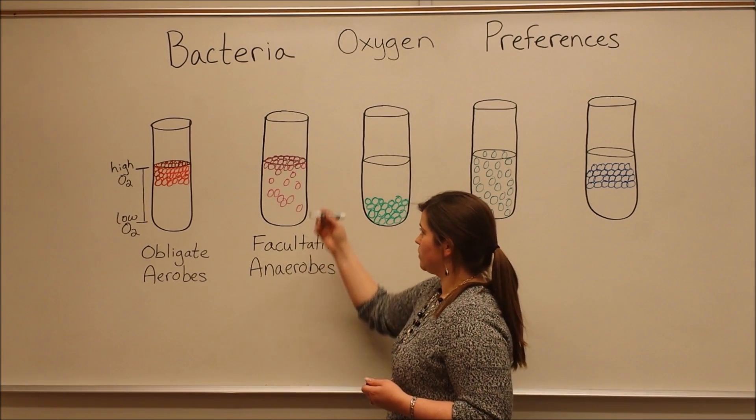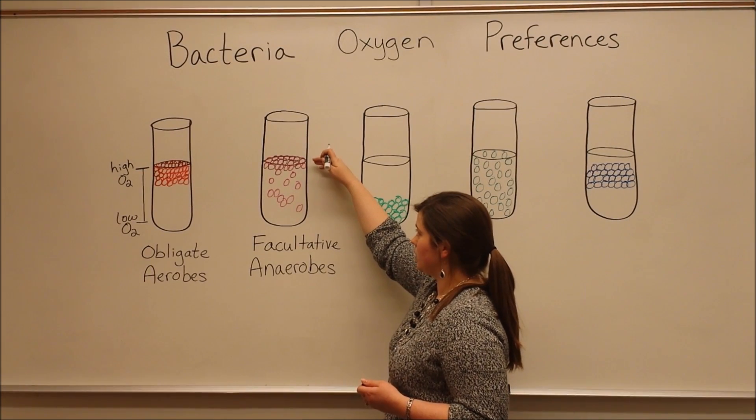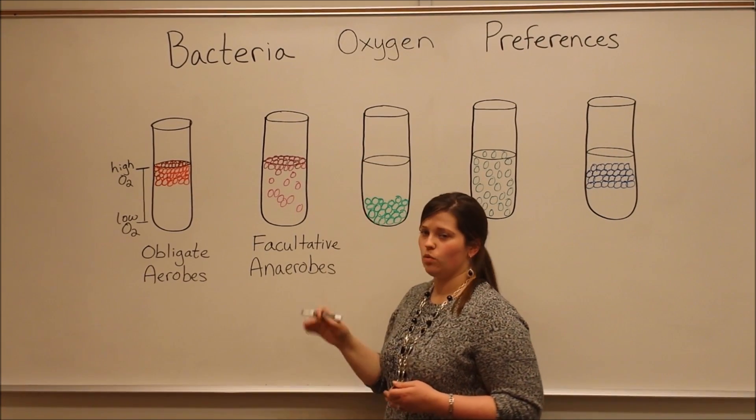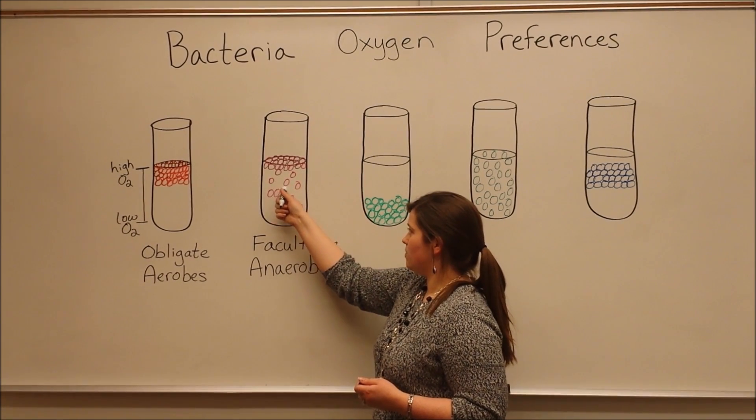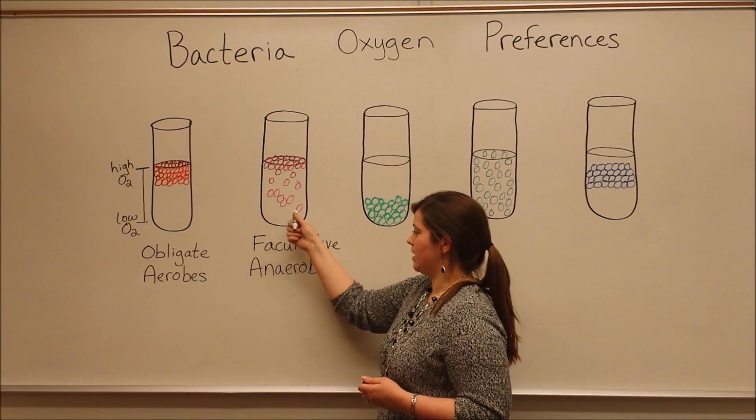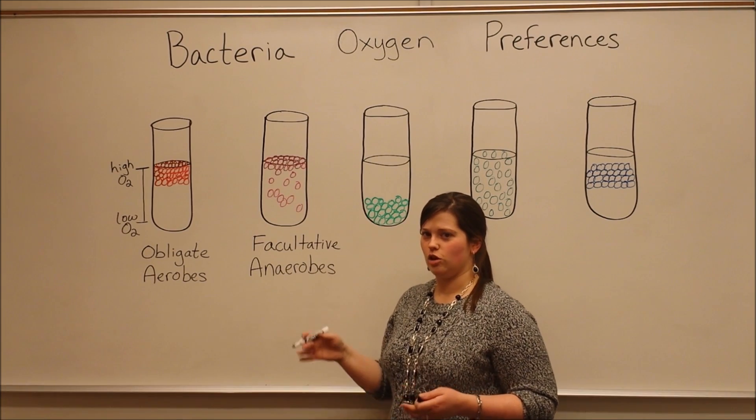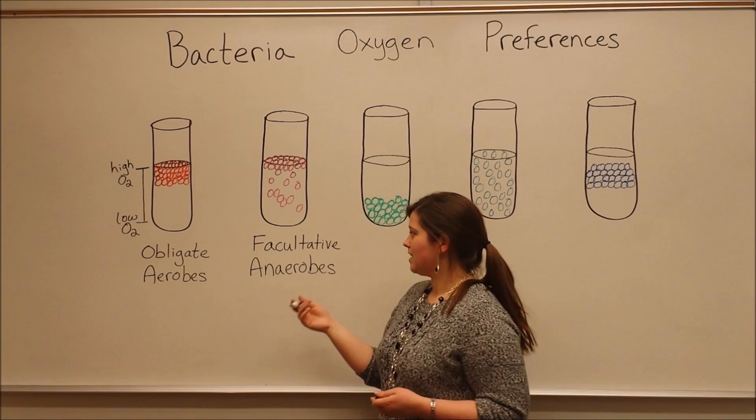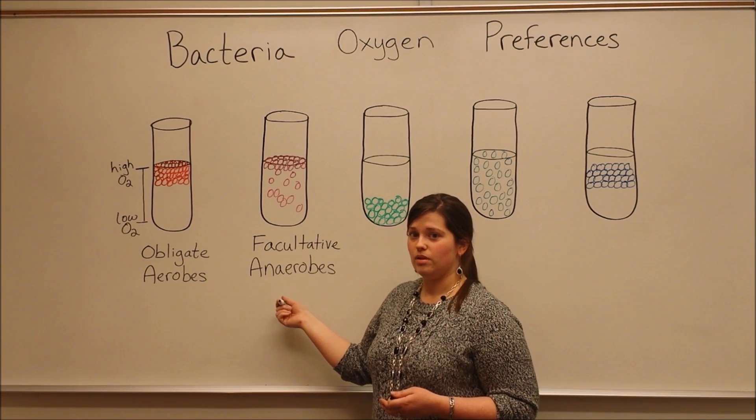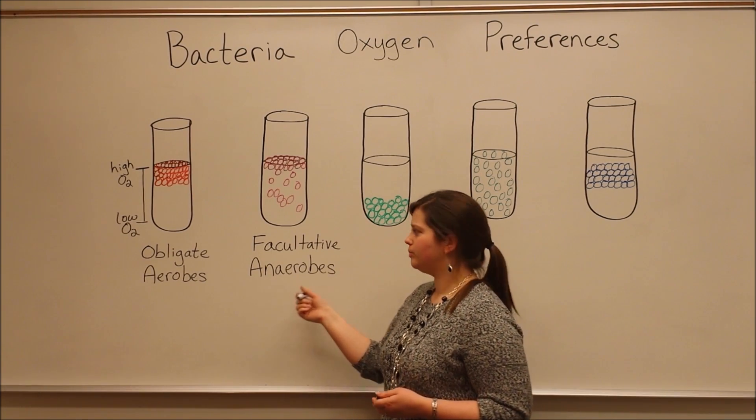That's why with facultative anaerobes, they are mostly clustered up at the edge of the culture medium, where there's a high concentration of oxygen. But we see that some of the bacteria are also growing lower down in the tube, where there's a lower oxygen concentration, because they can survive in these conditions. E. coli is an example of a facultative anaerobe.